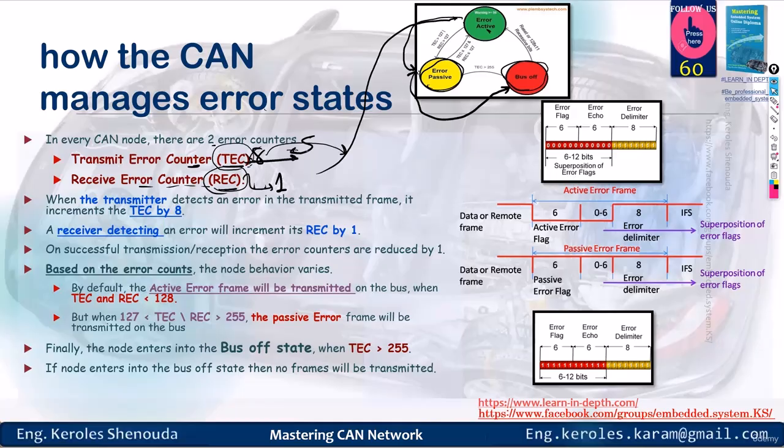So if you don't decrease the count and it keeps rising until it reaches 96, you're in the active error state. If it exceeds 127, you're in the passive error state. And if it goes beyond 256, you're in the bus off state.